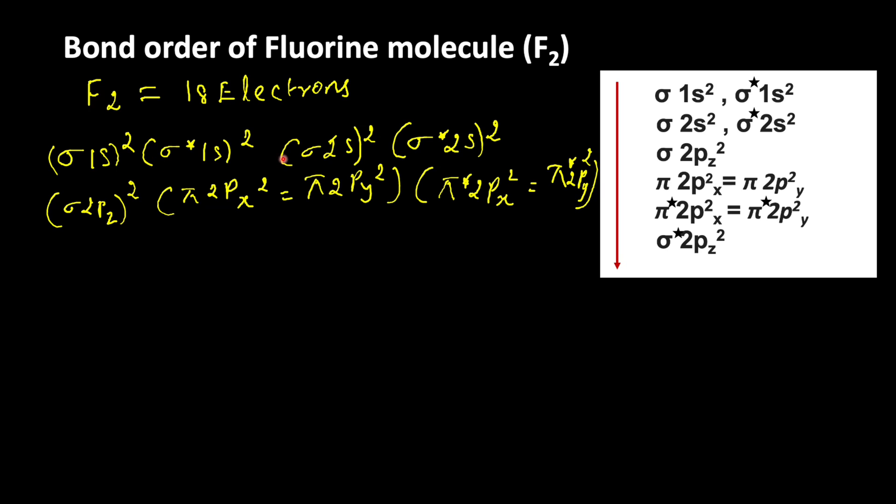2, 4, 6, 8, 10, 12, 14, 16, 18. So 18 electrons are present in this electronic configuration. Using this, let us write the bond order.